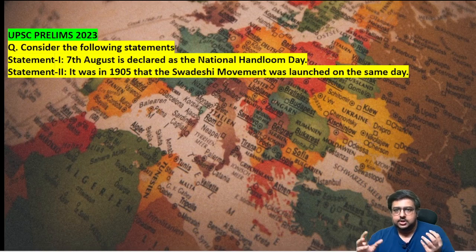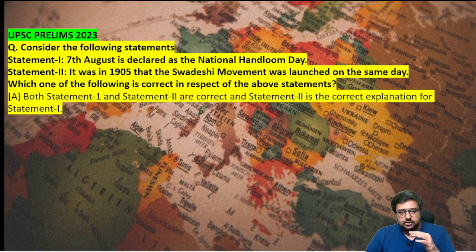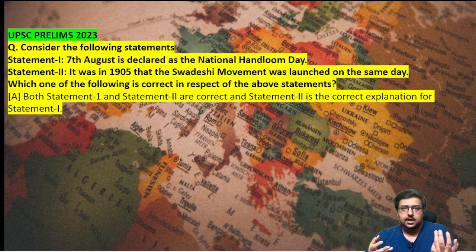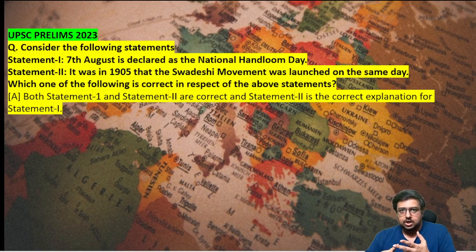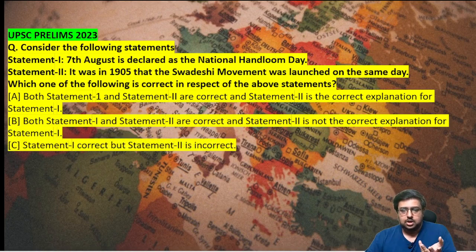Quit India movement, civil disobedience - how many will you study? To solve this it's pure GK, but the question is not over here because the options are CSAT-type options. They are asking: both Statement 1 and 2 are correct and Statement 2 is explaining Statement 1 - meaning whoever designed National Handloom Day chose August 7th because that was the Swadeshi movement day. But there's no guarantee - maybe they randomly chose August 7th for some other reason. So you have to know Statement 1, Statement 2, and that Statement 2 is the reason for Statement 1.